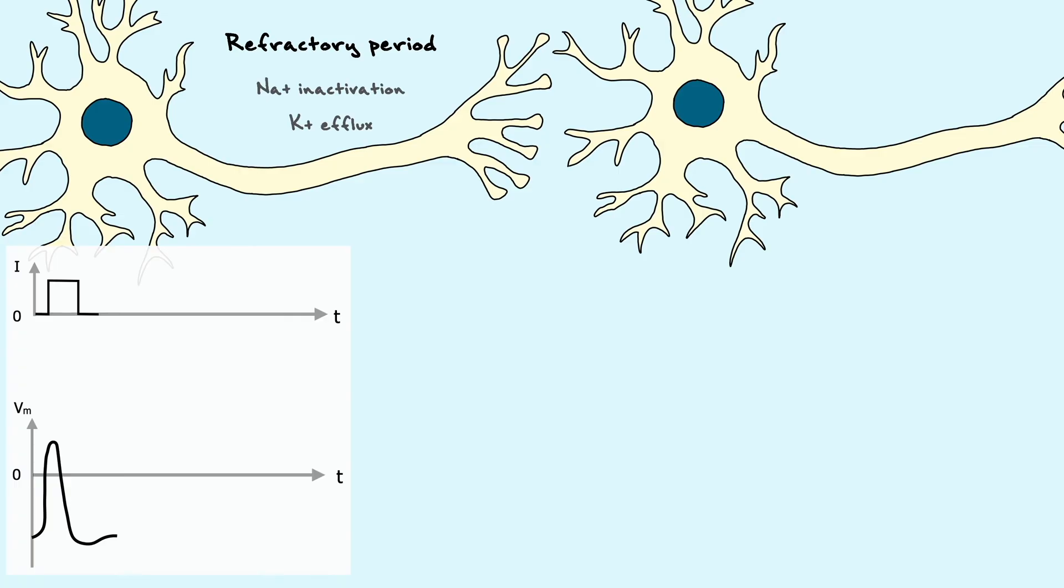If the first neuron fires an action potential very shortly after the first one, it is possible that the second neuron might not even be able to fire an action potential. This is caused by the fact that all of the voltage-gated sodium channels in the second neuron are inactivated. This state is referred to as the absolute refractory period.